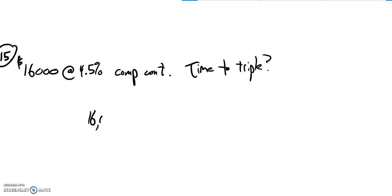So we know that it starts with $16,000, rate of 4.5%. We want to know what time would get us to a point where that would triple. So 3 times 16,000 is 48,000.